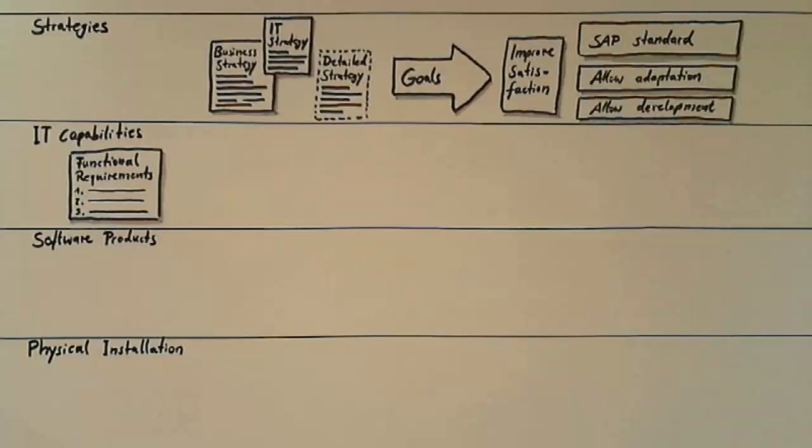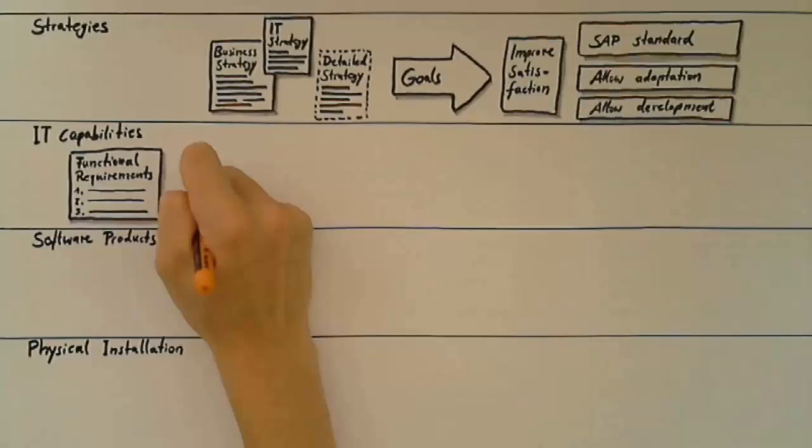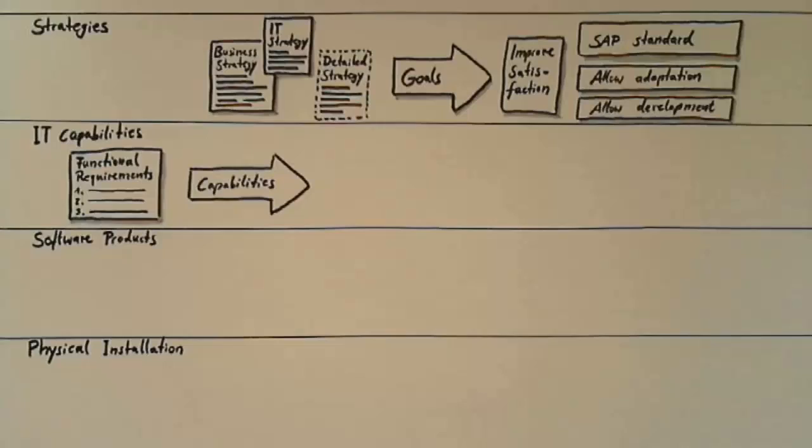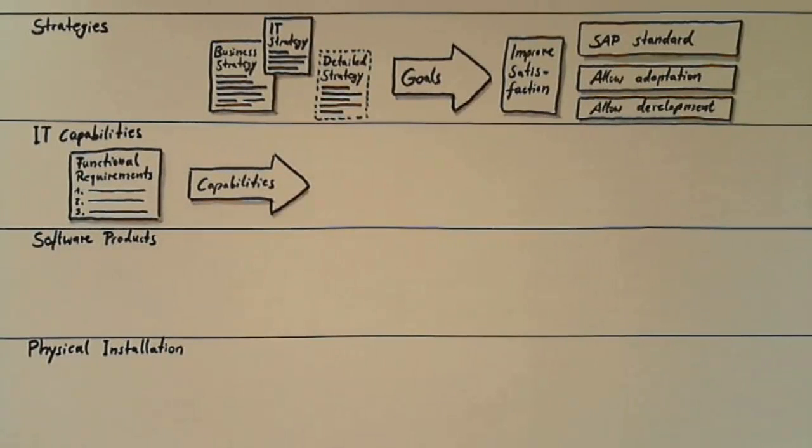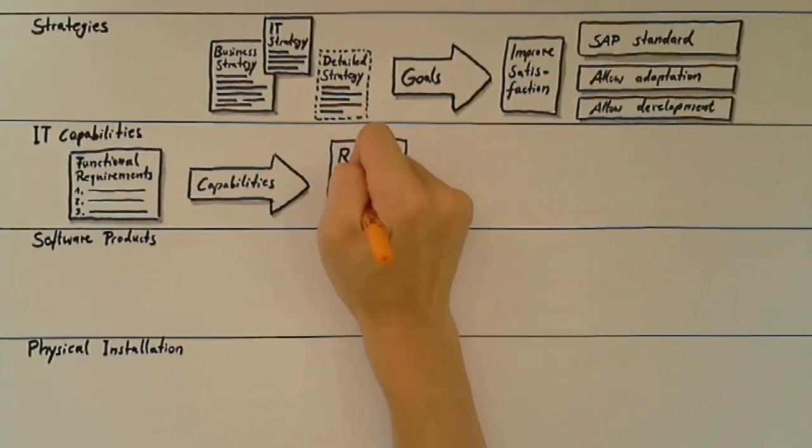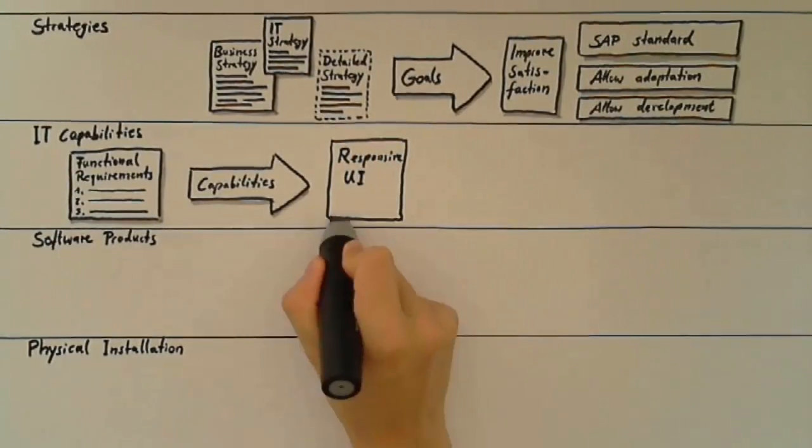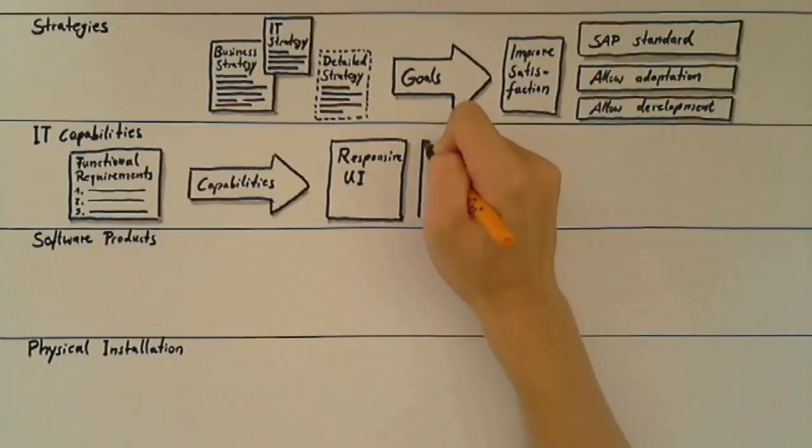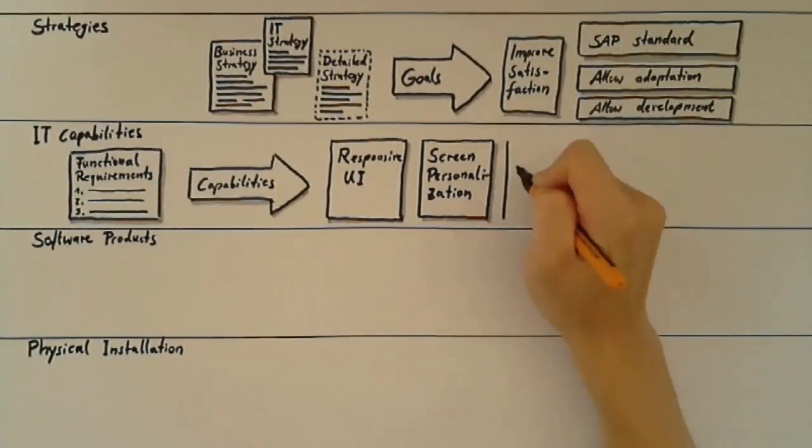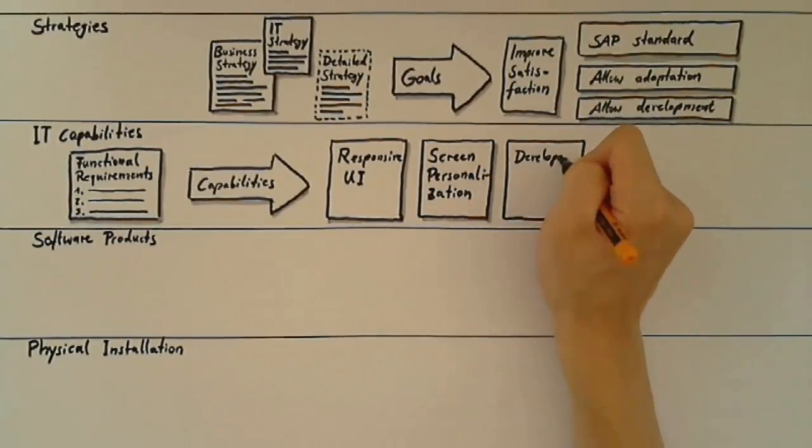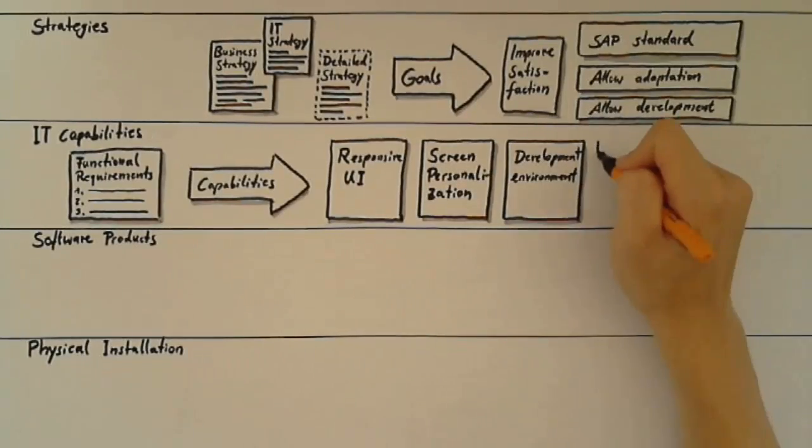This level targets the design principles of IT architecture in the enterprise at an IT specific but still software product agnostic level. This includes SAP agnostic view as well. Examples of capabilities are responsive UI, screen personalization, development environment, or change management.